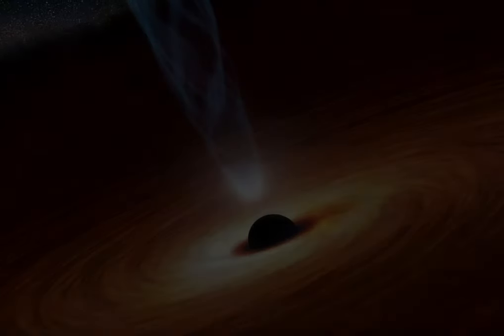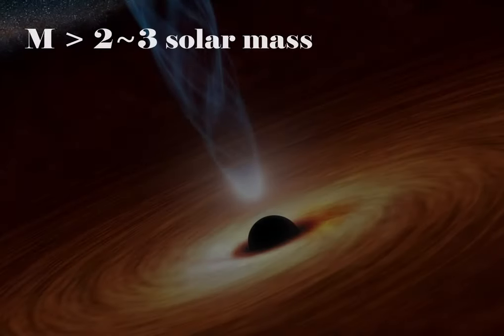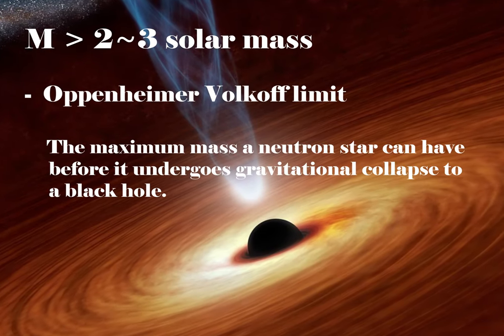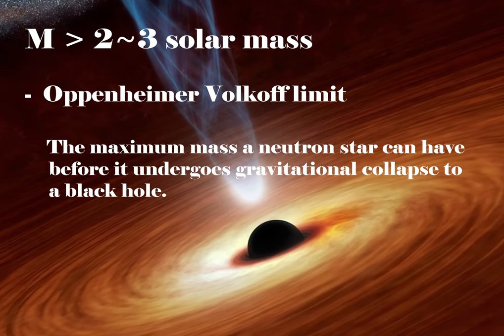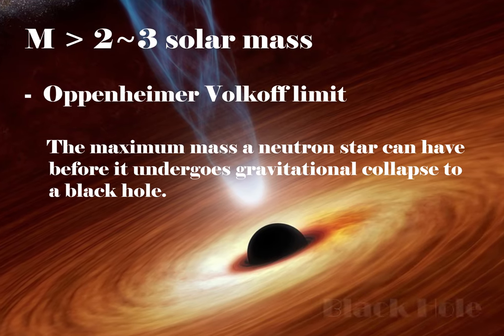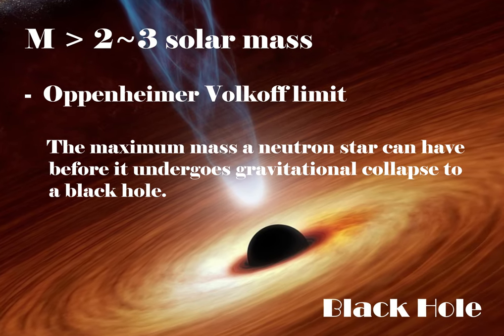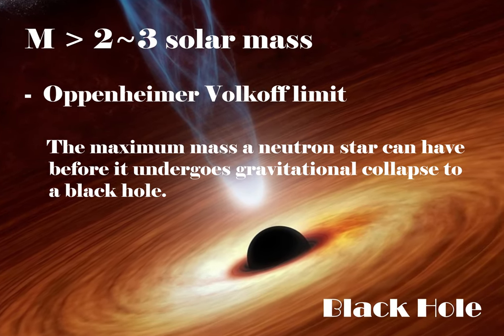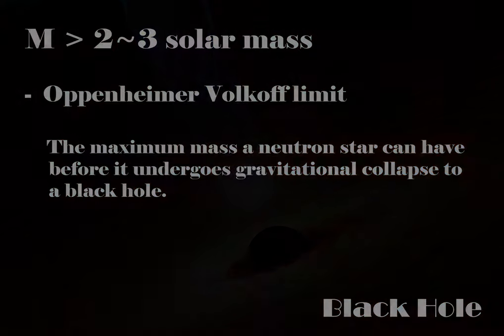For even larger stars, if their core mass exceeds two to three solar masses, they overcome the Oppenheimer-Volkoff limit. Due to the overwhelming force of gravity, the neutrons then begin to be crushed into each other, overcoming the neutron degeneracy pressure. Beyond this limit, there is no further force to prevent collapse, and so the star becomes a black hole.